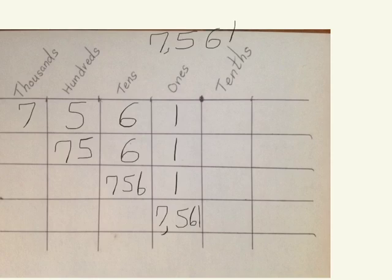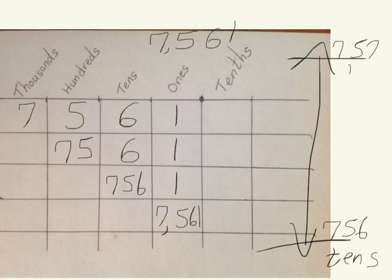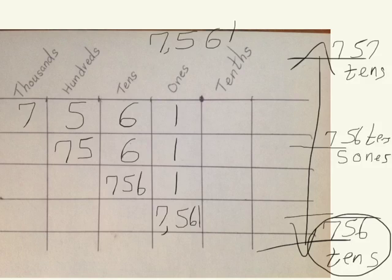Now let's round this number to the nearest tens place. We see that we have 756 tens. On our vertical number line, we start with 756 tens; the next ten up would be 757 tens. The midpoint halfway between is 756 tens and 5 ones, which is 7,565. Our number has 756 tens and 1 one, which lands below the midpoint. So our number rounds to 756 tens, or seven thousand five hundred sixty in standard form.